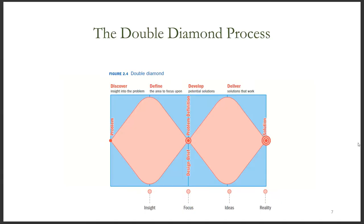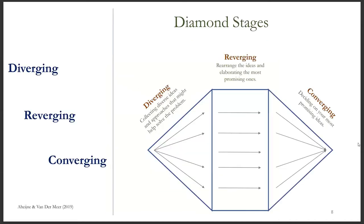The first diamond includes discovering and defining — it is all about discovering and defining the problem. The second diamond is about developing and delivering a solution to the design challenge. Each diamond stage in design thinking has three phases: diverging, emerging, and converging. Diverging means collecting diverse ideas that might help to solve the problem. Emerging means rearranging the ideas and elaborating the most promising ones. Converging means choosing your most promising ideas.